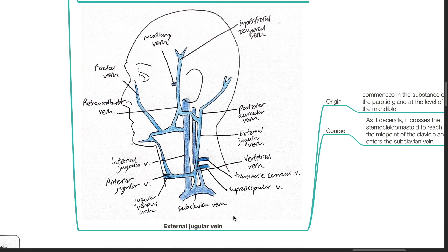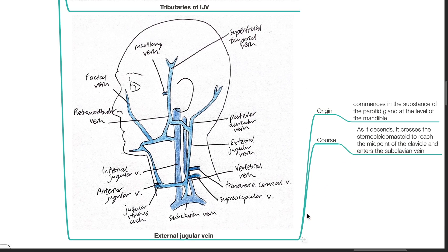A side note on the external jugular vein: it commences in the substance of the parotid gland at the level of the mandible. As it descends, it crosses the sternocleidomastoid to reach the midpoint of the clavicle, then enters the subclavian vein.